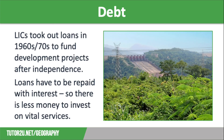Loans usually come with a considerable amount of interest, meaning that countries have less money to spend on essential services, such as education and healthcare, that would help the country develop. This was devastating for Zambia, who around the same time borrowed money in order to develop their copper industry. This seemed like a good plan.